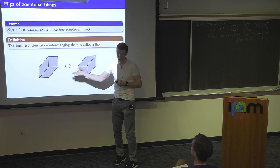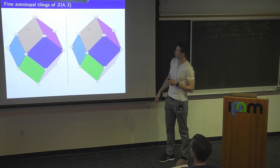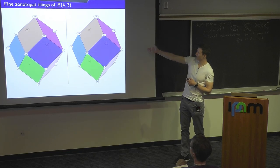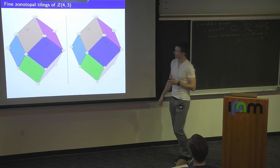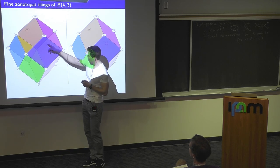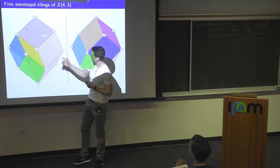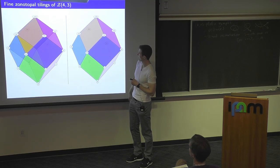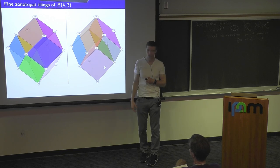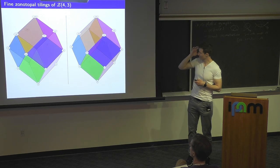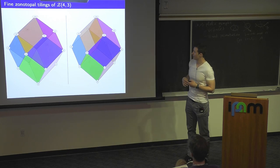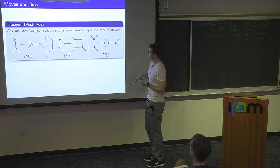Let me show a three-dimensional picture. I took four vectors in R^3, and I claim this polytope has only two fine zonotopal tilings. The first consists of four cubes — there's a '13' in the middle. The other is the upside-down version with a '24' in the middle. These are the only two possibilities — going from one to the other is a flip.